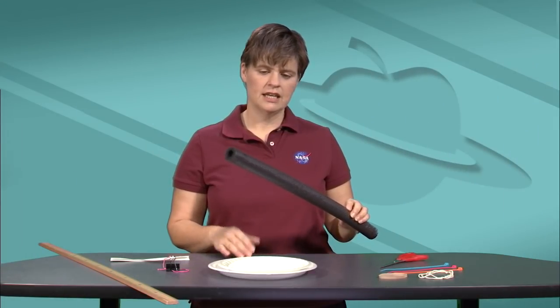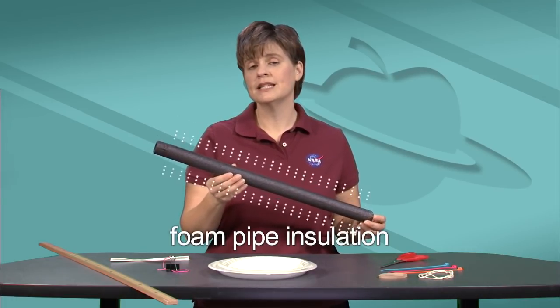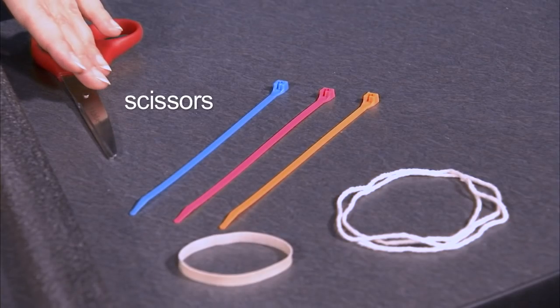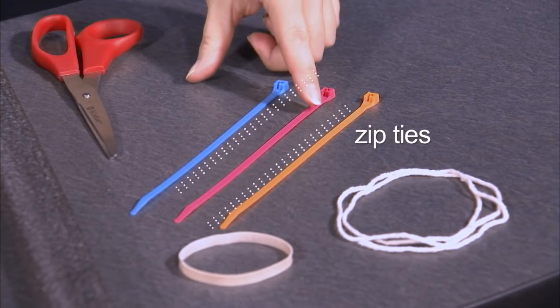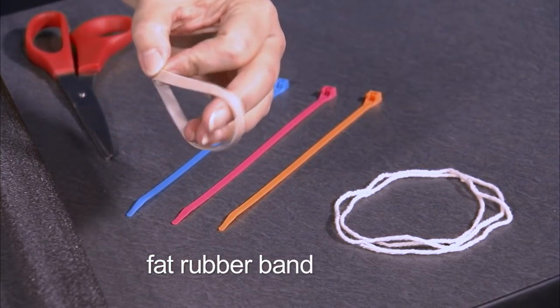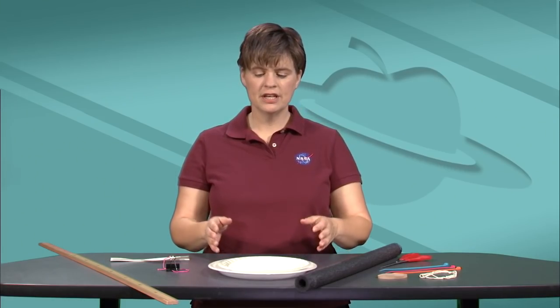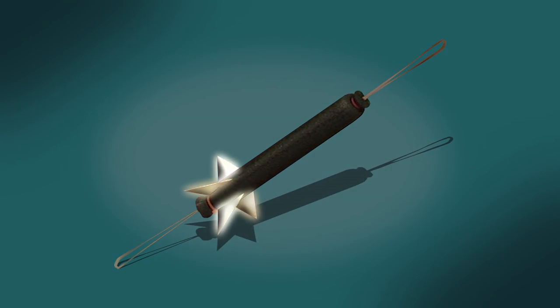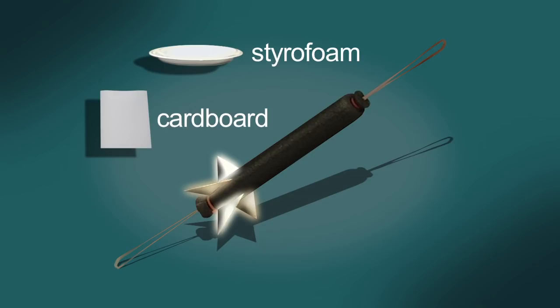You will need a piece of foam pipe insulation, about a half inch interior diameter, a pair of scissors, three zip ties, a small amount of string, one of these fat rubber bands, and some sort of stiff material to make your fins to keep the rocket stable. Styrofoam or cardboard or even some cardstock.